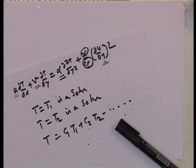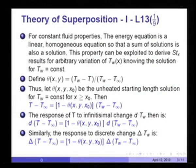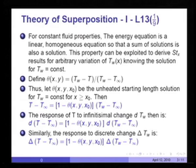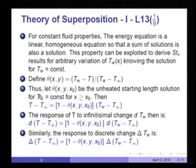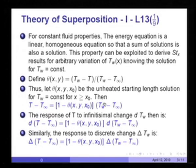This property of a linear equation is exploited to derive Stanton number results for arbitrary variation of Tw(x), knowing the solution for Tw equal to constant. We define theta(x,y) = (Tw - T)/(Tw - T_infinity) as before. Thus, theta(x, y, x_naught) will be the unheated starting length solution for Tw equal to constant for x greater than x_naught — the situation being what we had described earlier.